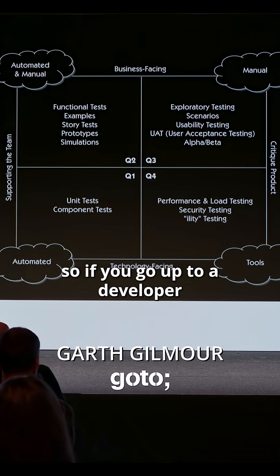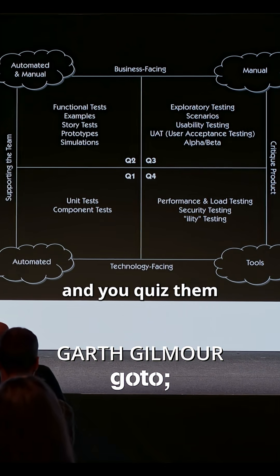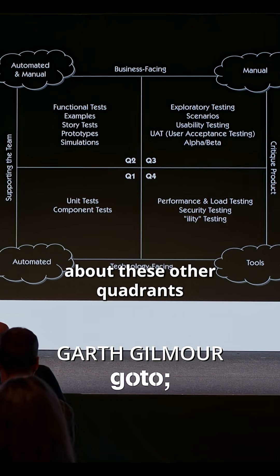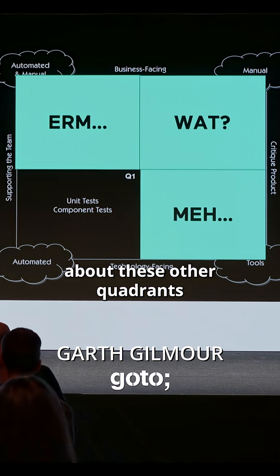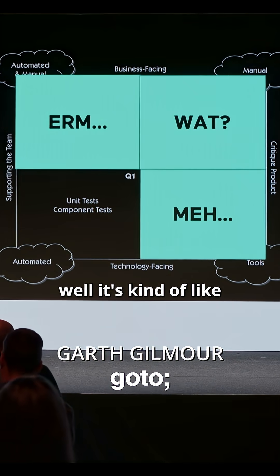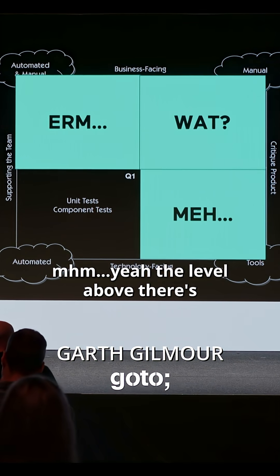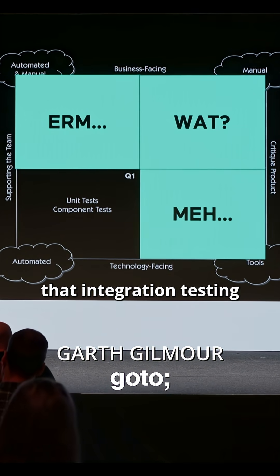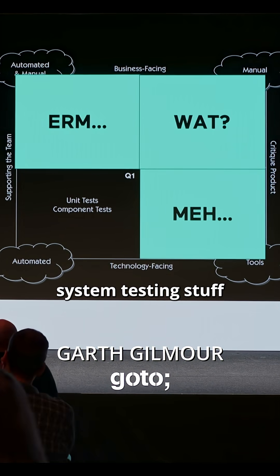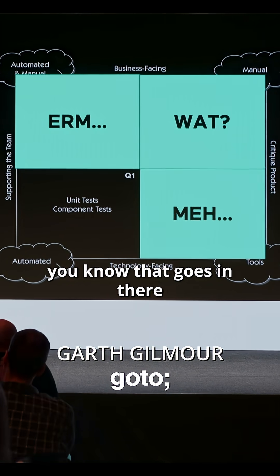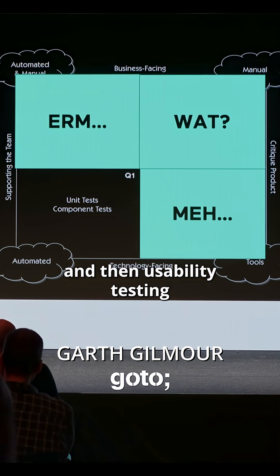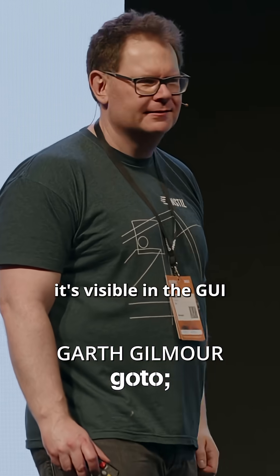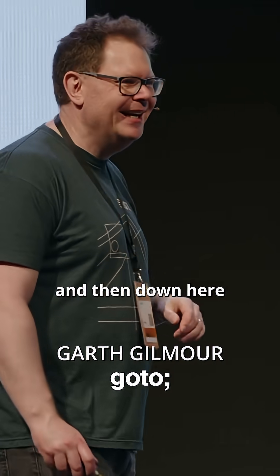So if you go up to a developer and you quiz them about these other quadrants, it's kind of like — the level above, there's that integration testing and system testing stuff that goes in there. And then usability testing? It's visible in the GUI, what's your problem?